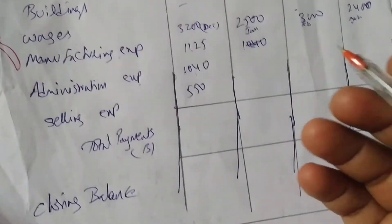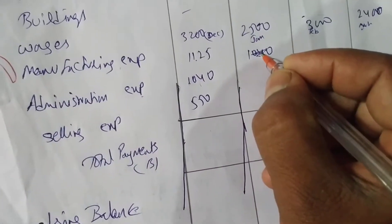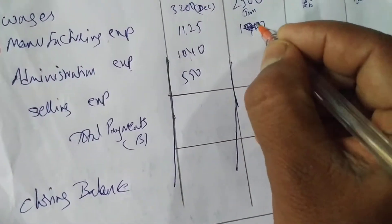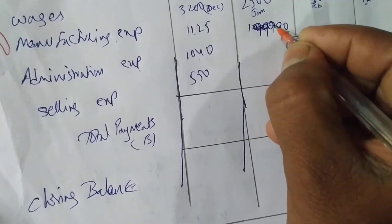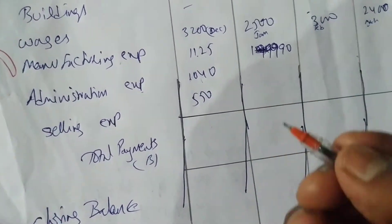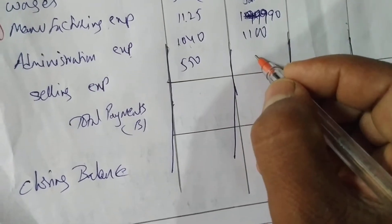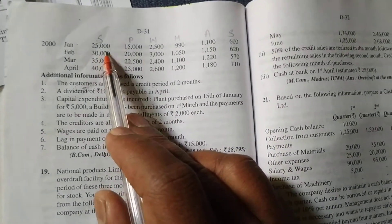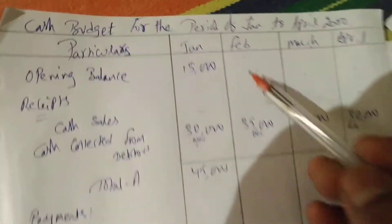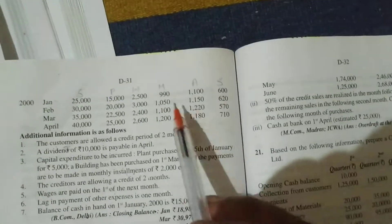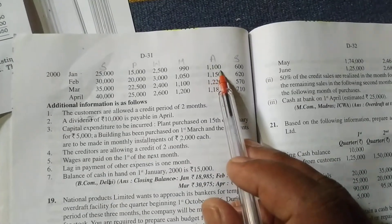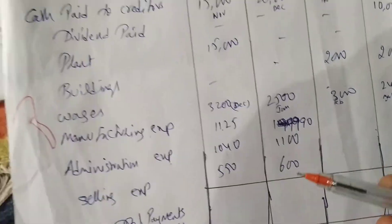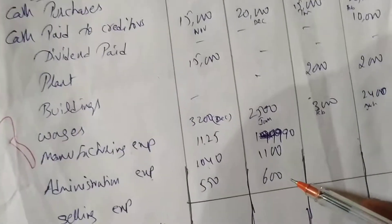In February we write January's expenses: manufacturing 990, administration 1,100, selling 600. So 990 as manufacturing, 1,100 as administration, and 600 as selling expenses — all January month expenses paid in February.